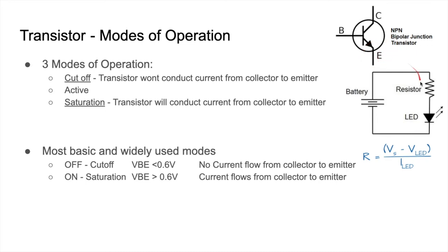Just like using a switch in a circuit, we can directly use a transistor. More about the cutoff and saturation regions: cutoff means the transistor is completely off. Whatever voltage you give between the base and emitter — if that voltage is less than 0.6 volts, then the transistor is off and collector-to-emitter conduction will not happen.